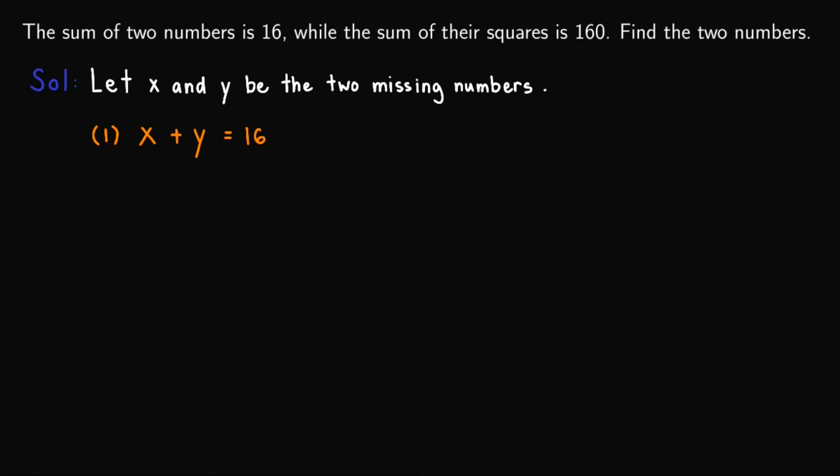Moreover, we know that the sum of their squares is 160. So we have x squared plus y squared equals 160. So these are the two equations that we need to solve this problem.